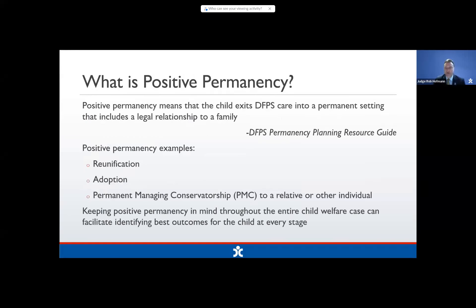What is positive permanency? DFPS tells us in their guide that positive permanency means the child exits DFPS care into a permanent setting that includes a legal relationship to a family. Number one would be reunification — that's the goal we're always seeking. If that's not a possibility, adoption by a relative, fictive kin, or a non-related person. We also have PMC — permanent managing conservatorship — to a relative or another individual. Keeping those outcomes in mind every time you have a hearing is critical to starting with the end in mind.